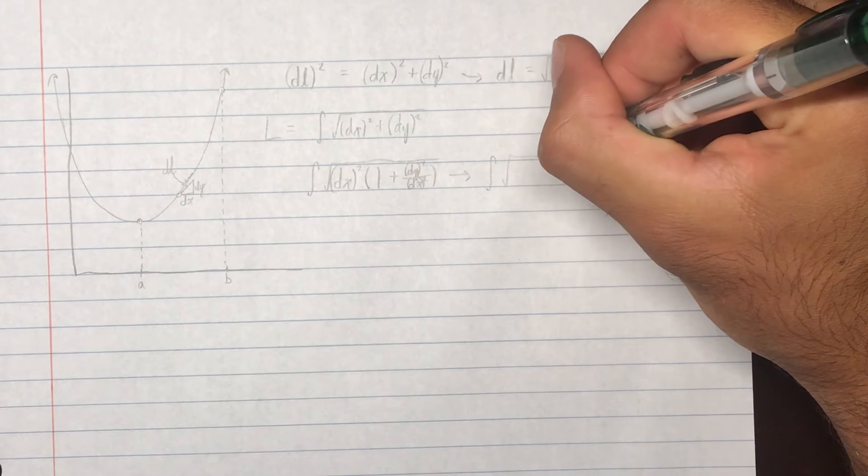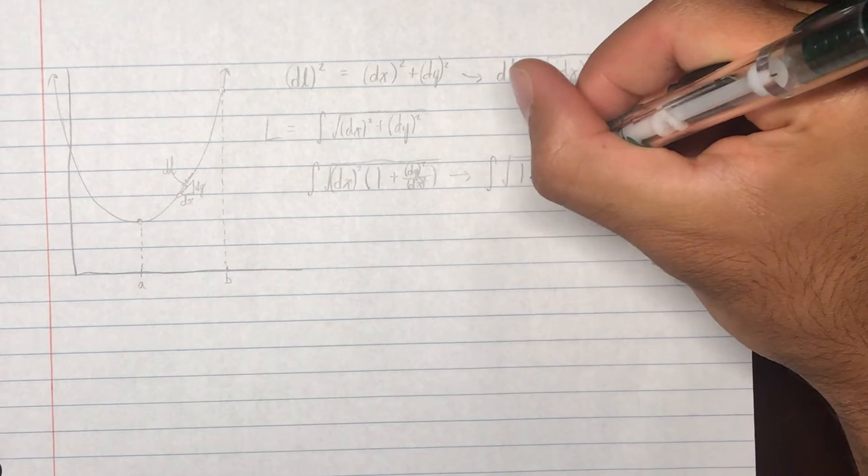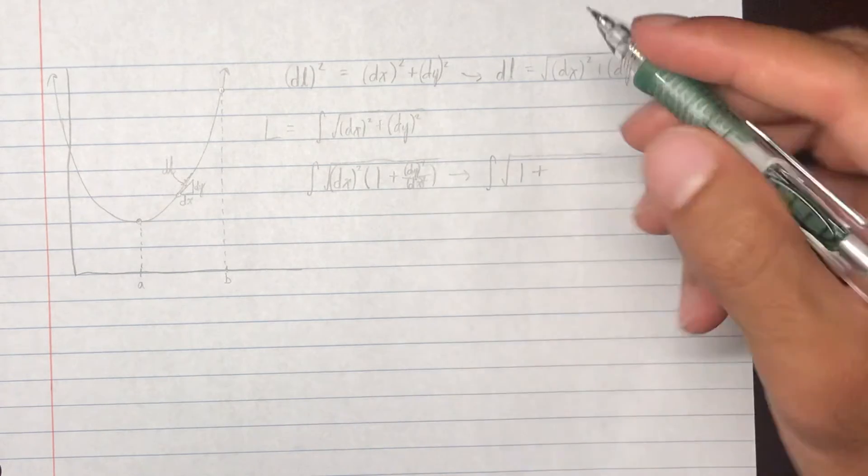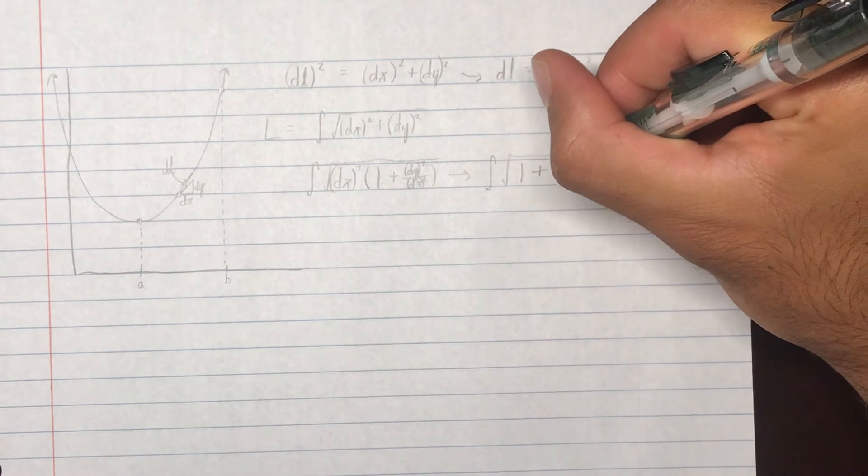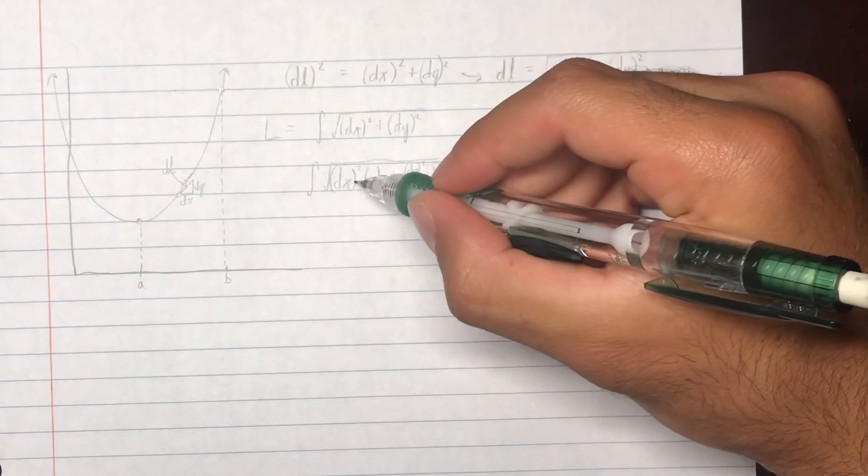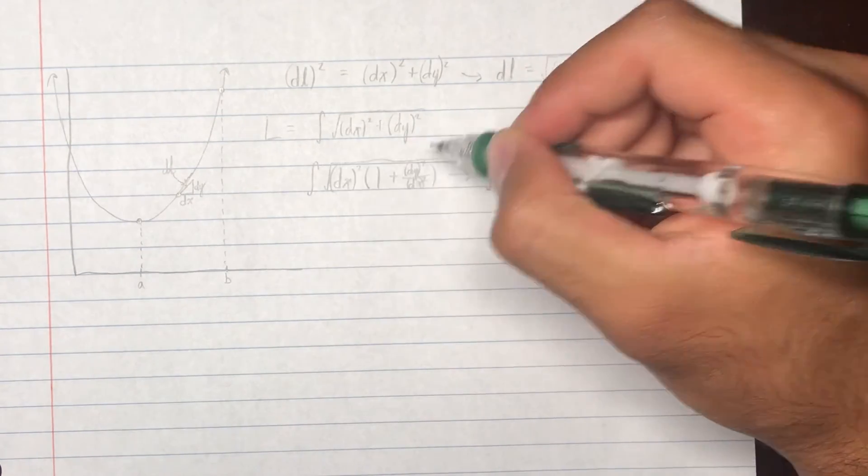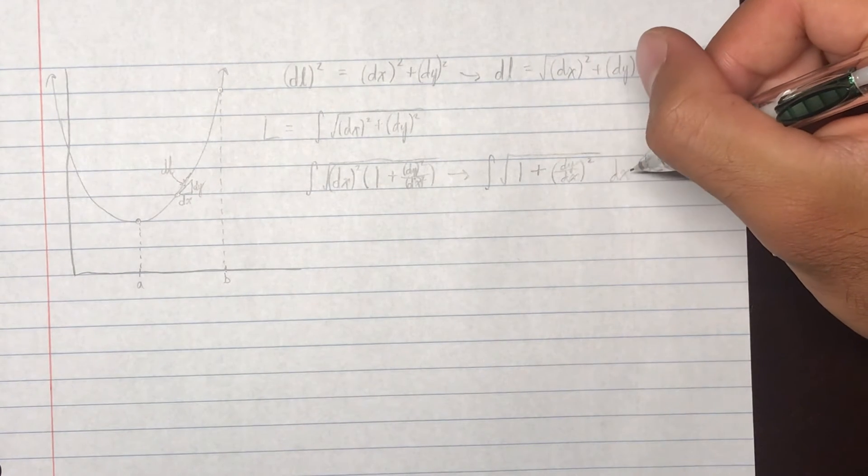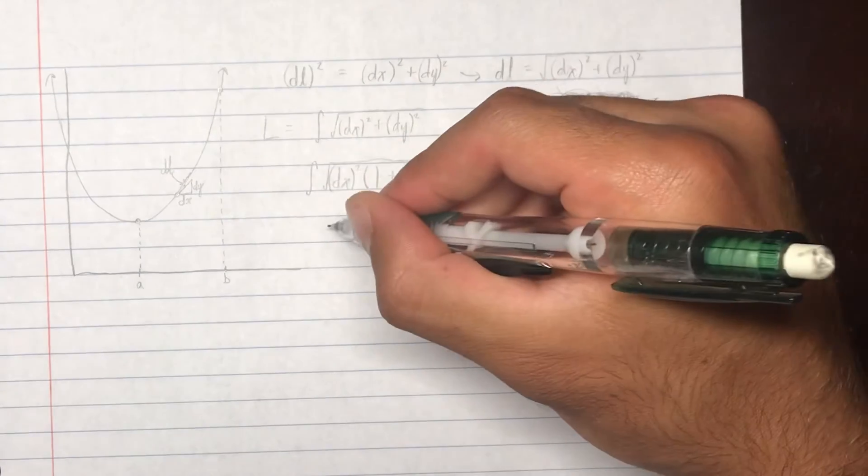So, this becomes 1 plus, and then remember that dy squared over dx squared is the same thing as dy over dx squared. And then, the factored out dx squared, root of that, that moves out to here, so it's just dx.